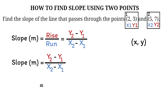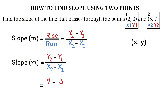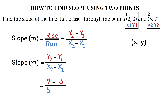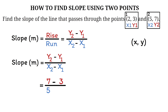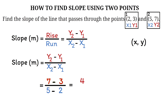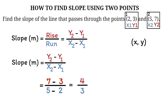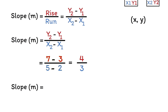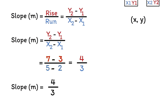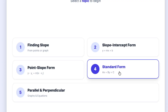Now let's substitute the values into the slope formula. We have 7, which is y2, minus 3, which is y1, divided by 5, which is x2, minus 2, which is x1. Simplifying: 7 minus 3 is 4, over 5 minus 2, which is 3. So the slope is 4 over 3. To truly lock this in, you need to practice.